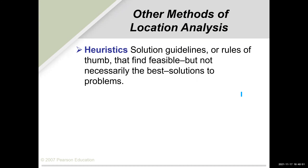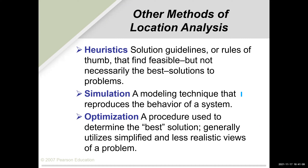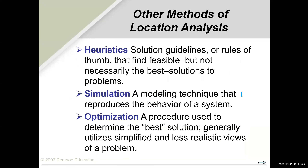Other methods of location analysis include heuristics — algorithms or rules of thumb that find feasible but not necessarily optimal solutions; simulation — a modeling technique that reproduces the behavior of a system; and optimization — a procedure used to determine the best solution, generally using simplified or less realistic representations of a problem. IE students take courses in simulation and optimization. The rest of the presentation contains solved problems available for self-study. Any questions can be addressed, and we'll talk more next week.